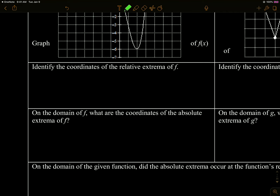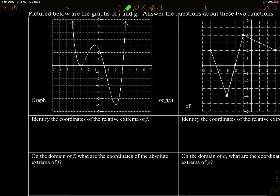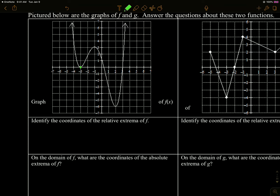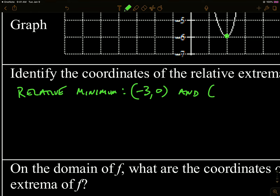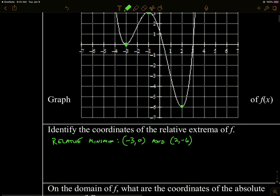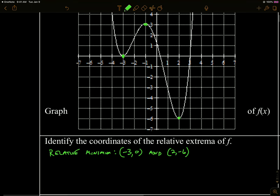Let's look at F. Identify the coordinates of the relative extrema. So we've got a relative minimum here, a relative maximum here, and a relative minimum there. So we're going to say we've got relative minimums at negative three, zero, and two, negative six. And then we've got a relative maximum at negative one, three.